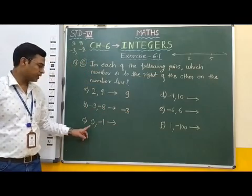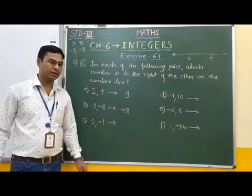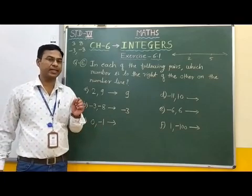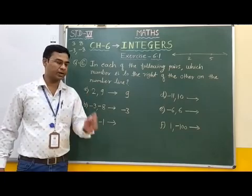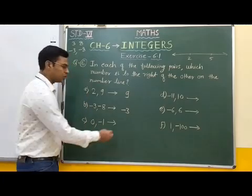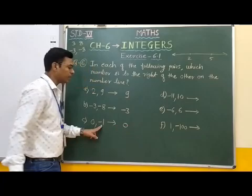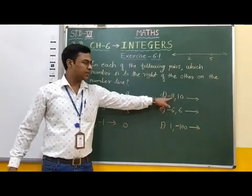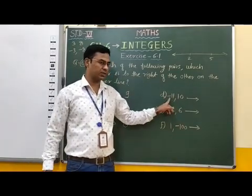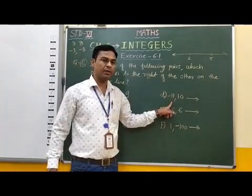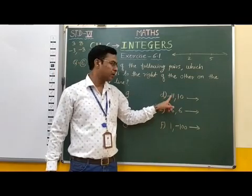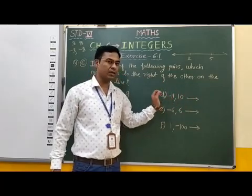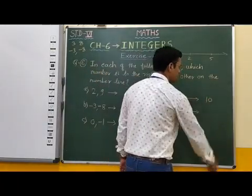Now next, 0 and minus 1. Among these two numbers, 0 is greater, because 0 is always greater than any negative number. Therefore, 0 is on the right side of minus 1. Next, minus 11 and 10. Among these two numbers, 10 is greater than minus 11. Therefore, 10 is on the right side of minus 11, and the answer is 10.